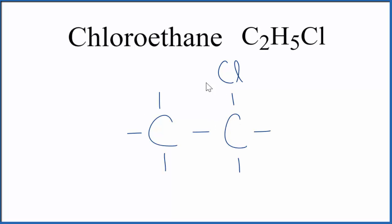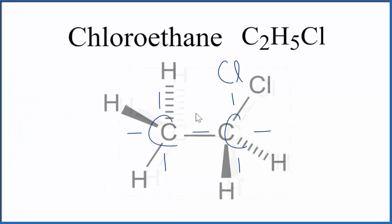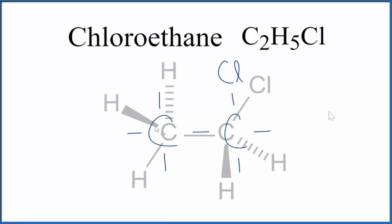If we wanted to look at this a little more three-dimensionally, that would look like this. You can see we have the two carbons — this carbon has one, two, three hydrogens, and this carbon has two hydrogens and the chlorine. That's chloroethane. The molecular geometry with respect to each carbon would be tetrahedral.